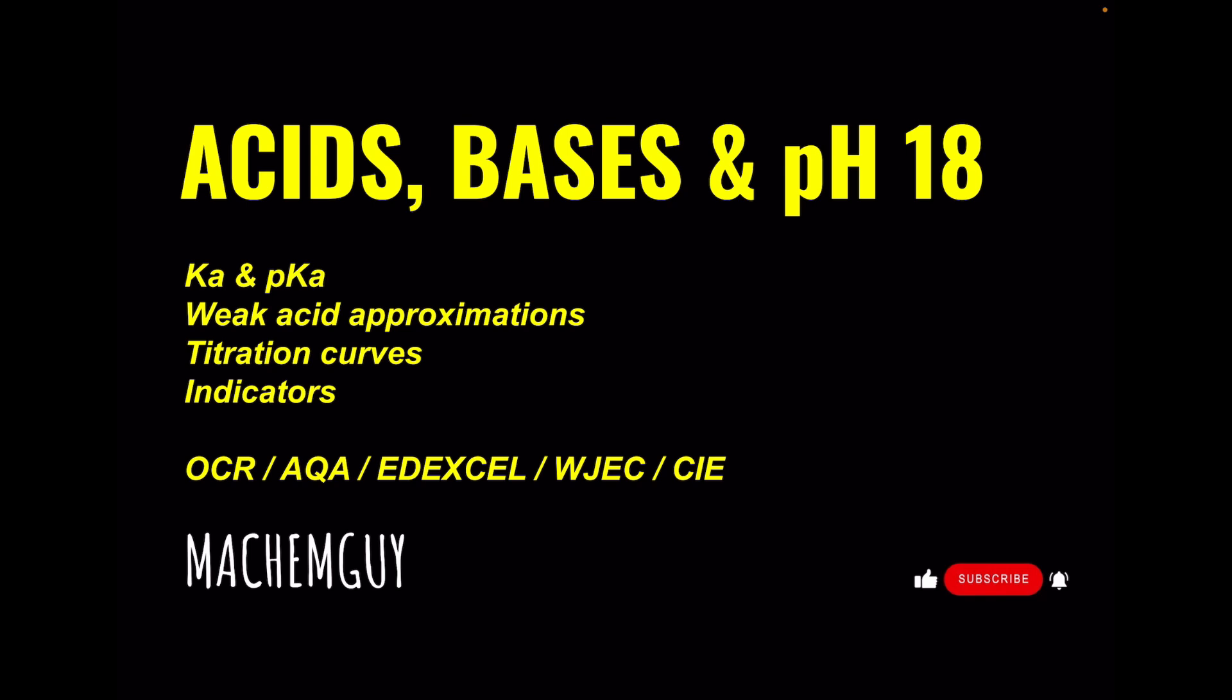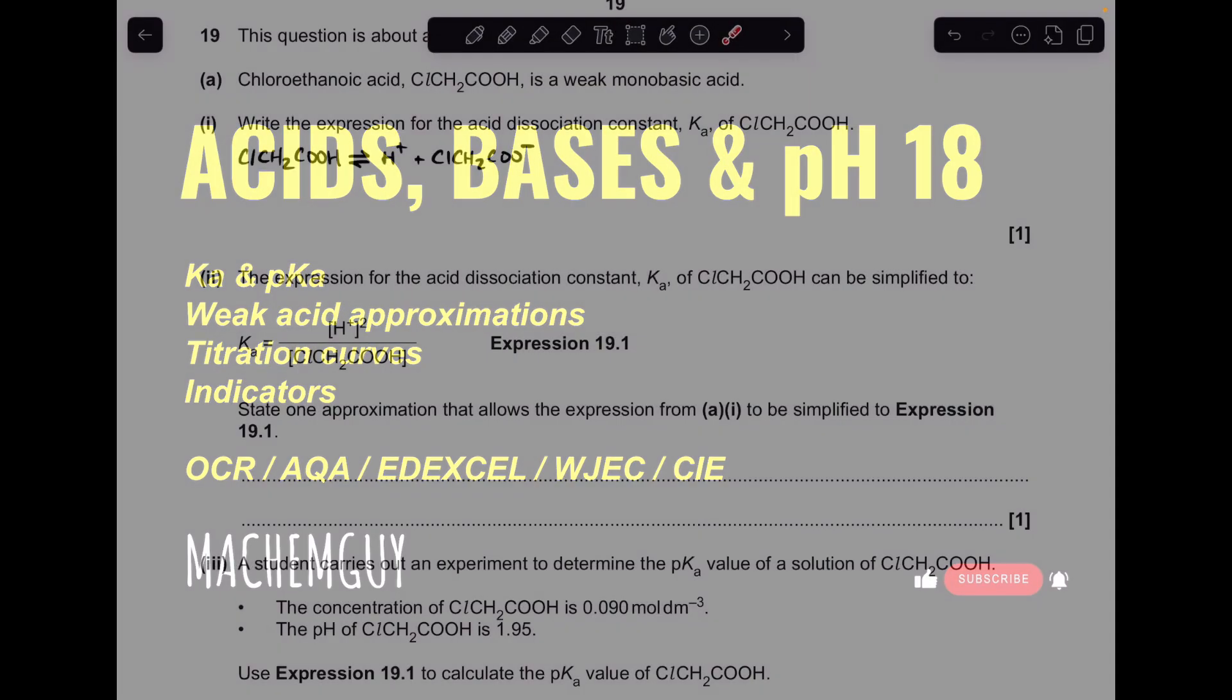So the question deals with Ka and pKa, there's a little bit about weak acid approximations, there's a question on titration curves and choice of indicators. Hope you liked the video, hope you find it helpful, and if you haven't already subscribed to the channel I'd love you to do so. But as always, the link to the questions in the description of the video if you want to try it first.